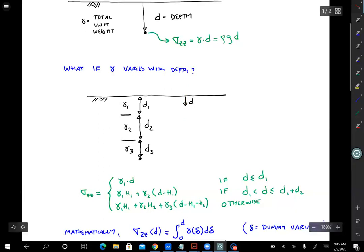So if d is less than or equal to d1, you simply return gamma 1 times d. So you're within layer one, you have to do this checking. Then if d1 is less than d, which is less than or equal to d1 plus d2, so if d is in this range, then you would use gamma 1 times h1 plus gamma 2 times d minus h1.